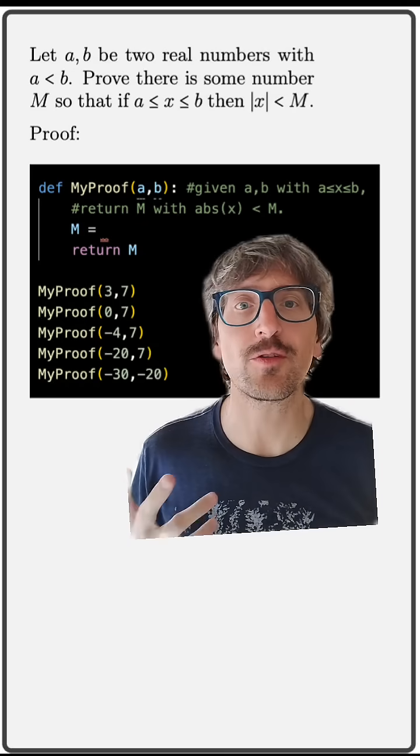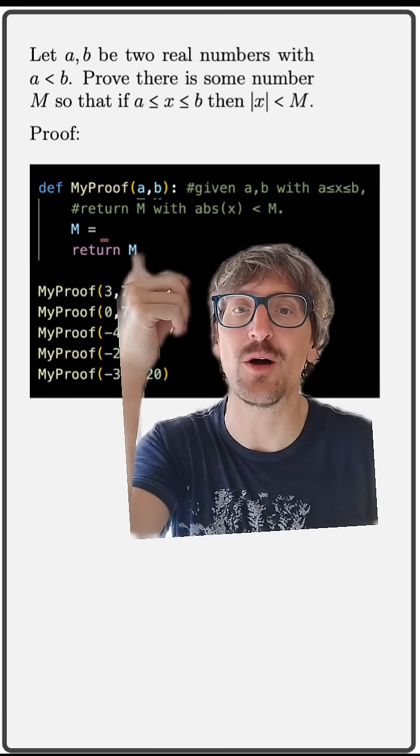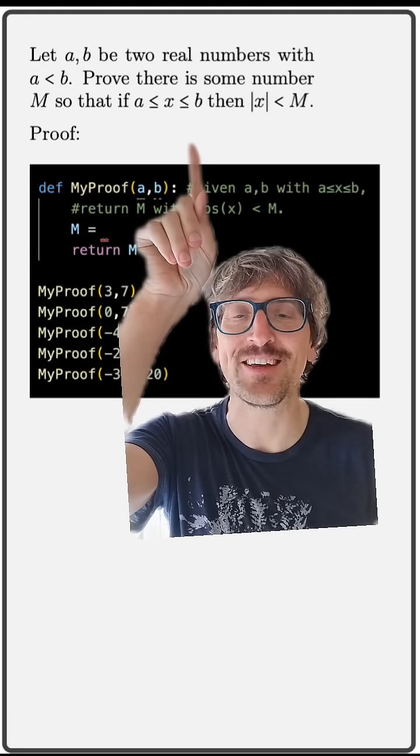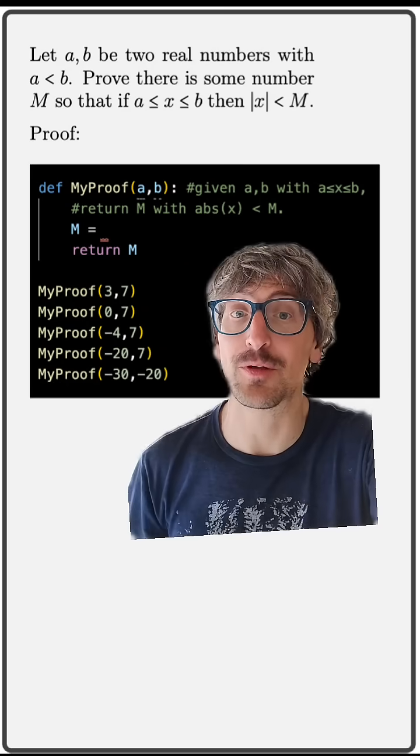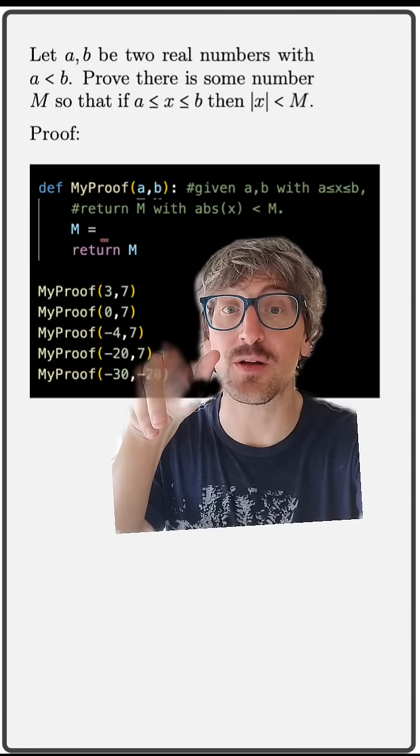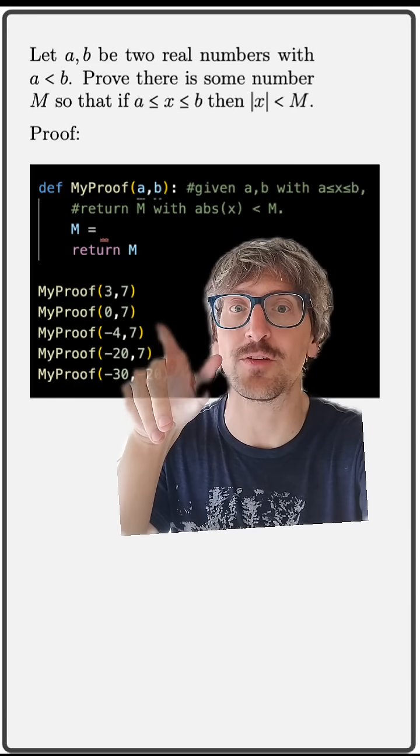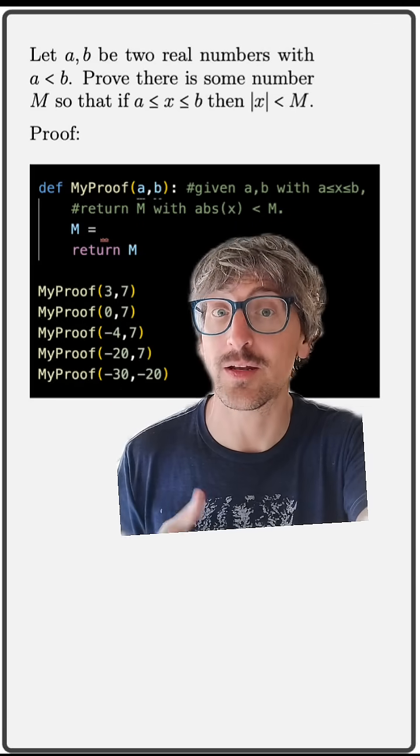For instance, the first guess students think of is just taking b plus one. After all, if x is less than b it's definitely strictly less than b plus one, and that works totally fine if your inputs are positive. If a and b are positive numbers then sure, just take the right endpoint and add one.